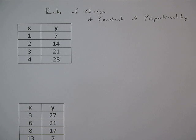In today's video we're going to go over four different tables and calculate the rate of change and the constant of proportionality. These two things will help us to determine a few things about each table, like if the relationship is linear and if it's proportional.